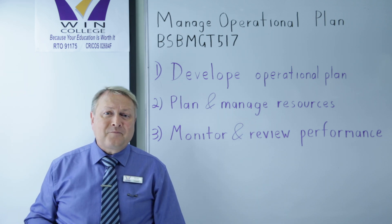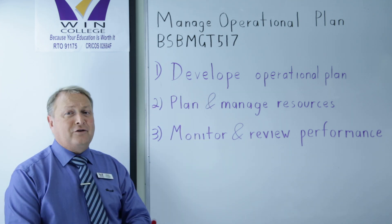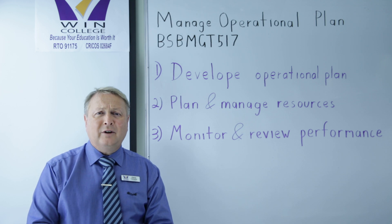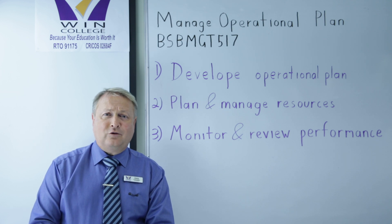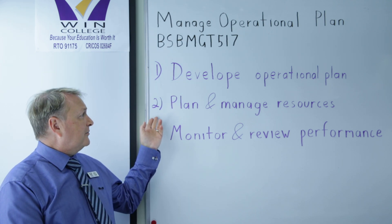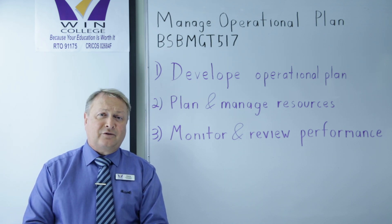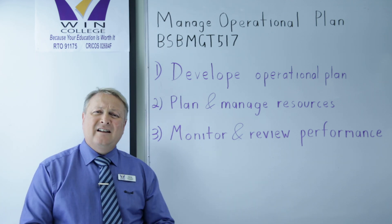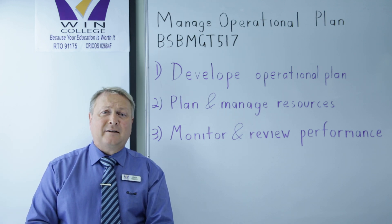So what we're going to do in this unit is it's broken down into three chapters. First chapter: develop an operational plan — basically, come up with the plan, and make sure that you recognise the operational plan for what it is. In the second chapter, we're going to do how to plan and manage resources — what do you need? In the third chapter, we're going to monitor and review the performance. These sound very scary and business-like, but my job is to break that down and make it really simple.